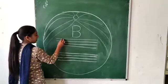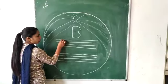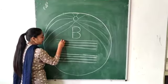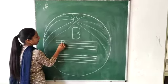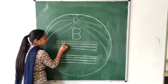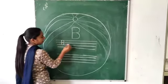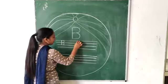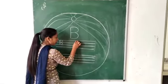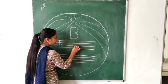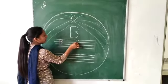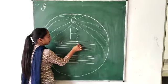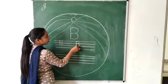First of all you write standing line, then curve. Again curve. First of all you write standing line, then curve. Again curve.